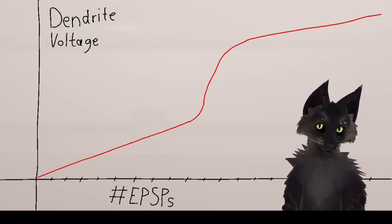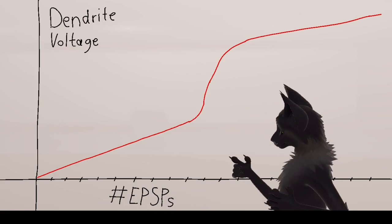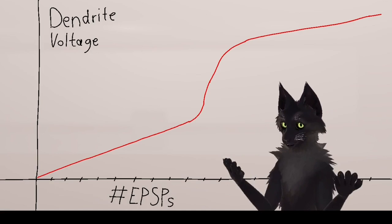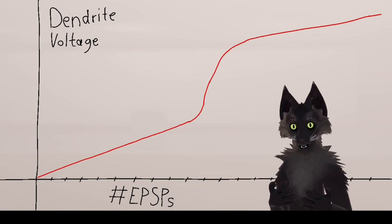This phenomenon is known as the dendritic non-linearity, and sometimes dendrites are described as active dendrites. Normally, the EPSPs sum in a linear fashion, as shown on this portion of the graph. But when enough EPSPs happen together on the same dendrite, their combined effect is greater than the sum of their individual effects because of the special ion channels. That's shown on this portion of the graph up here.